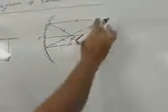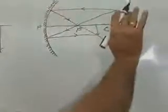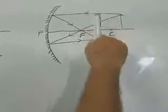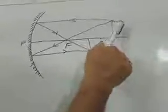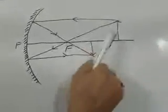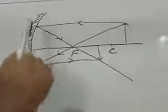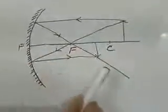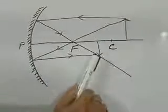Object and image are both on the same side of the mirror. It is real. You can see the object position and the image position — it is real, inverted, and the size is smaller than the object. So when an object is placed beyond C, the image will be real, inverted, and smaller than the object.